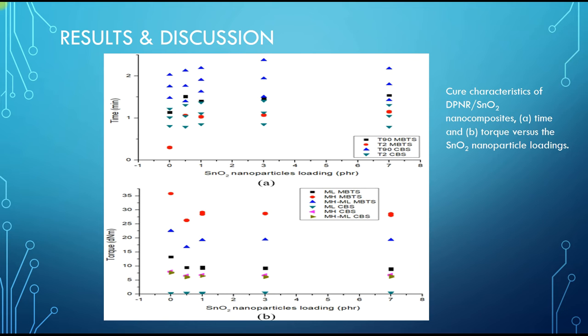It shows that as tin dioxide loading increases, the T20, the scorch time, and also the maximum cure time are delayed. So it functions as a cure retarder or cure delay.